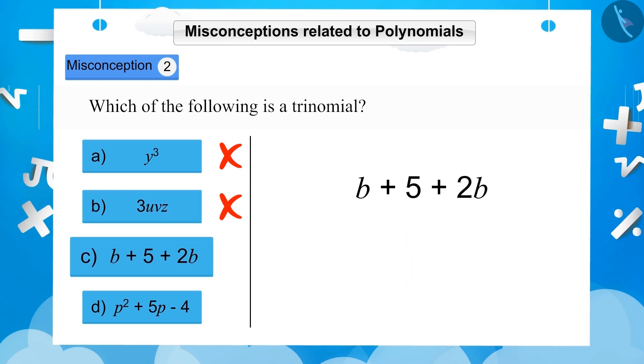c, b plus 5 plus 2b. If you observe option c, b and 2b are like terms and the second term is 5. Hence, it is a binomial. So, this too is not the correct answer.